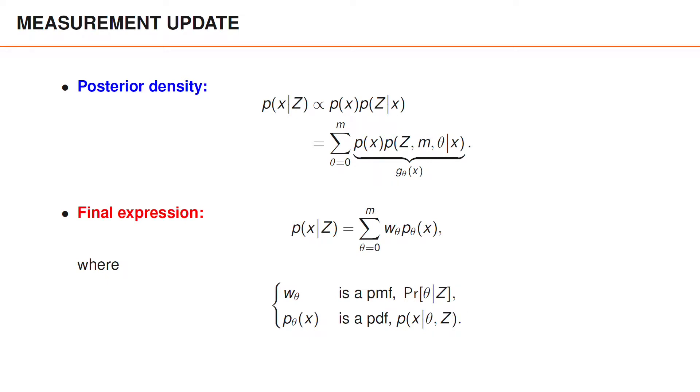In the previous video, we used Gθ to denote the function inside the summation. We then explained how we can express the posterior as a summation over Wθ times Pθ. It was clear that Wθ is a probability mass function and that Pθ is a probability density function in the measurements z. In this video, I'd like to briefly highlight that these properties are reasonable from a certain perspective.